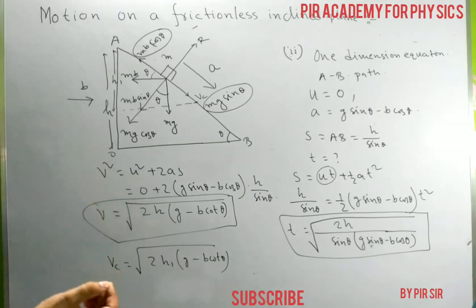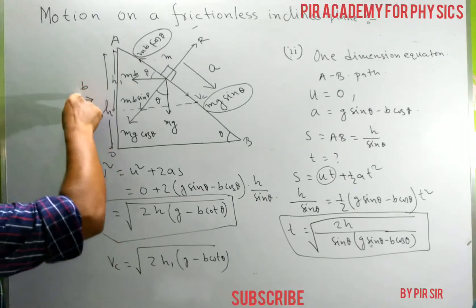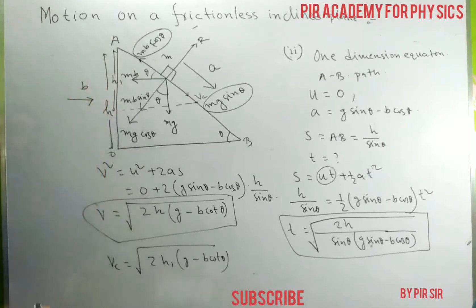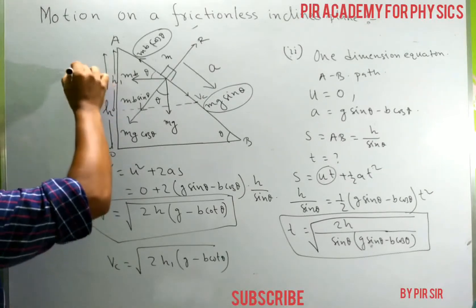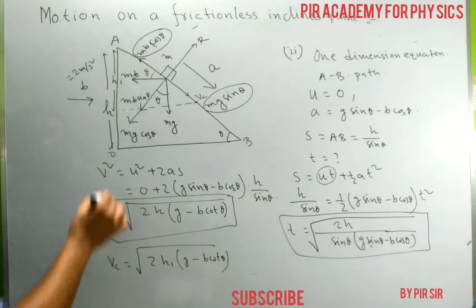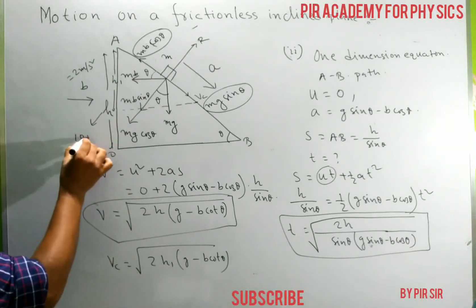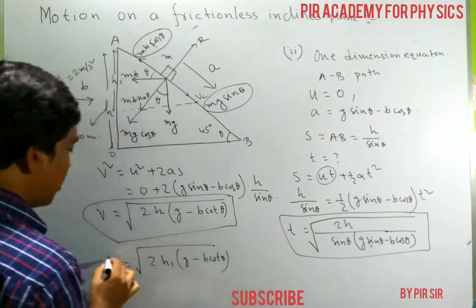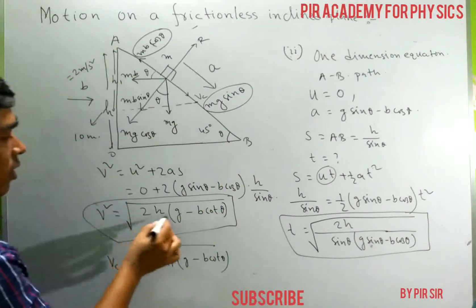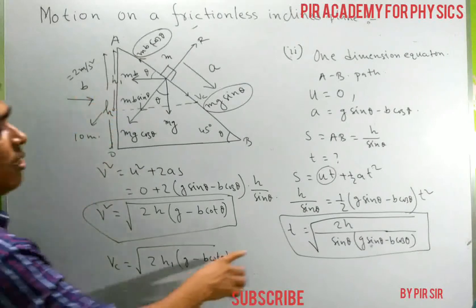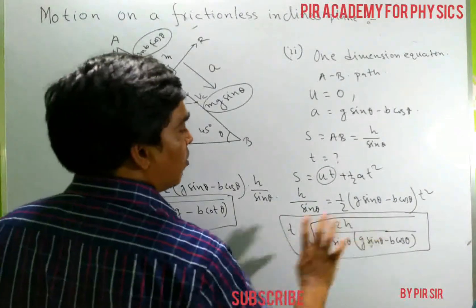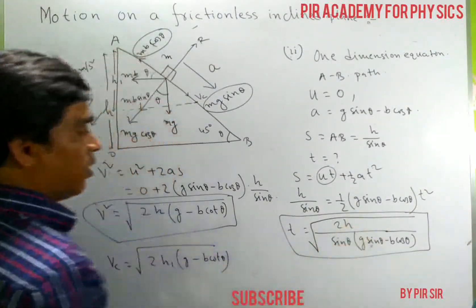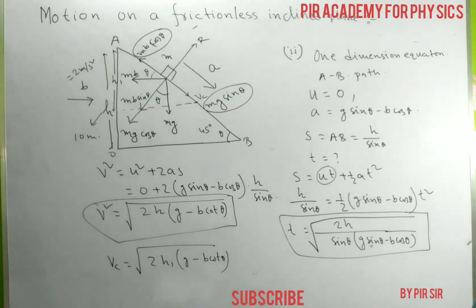Numerical example for case two: if acceleration B equals 2 meters per second squared, height equals 10 meters, and angle equals 45 degrees, you can easily calculate the velocity and the time by substituting these values into the derived formulas.